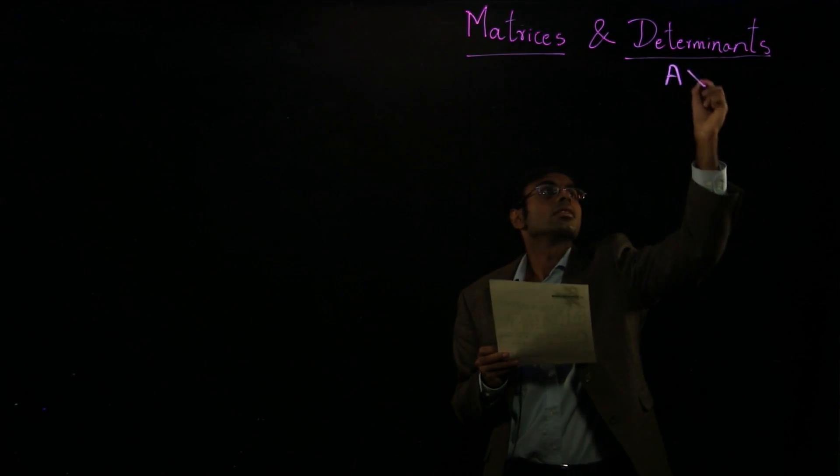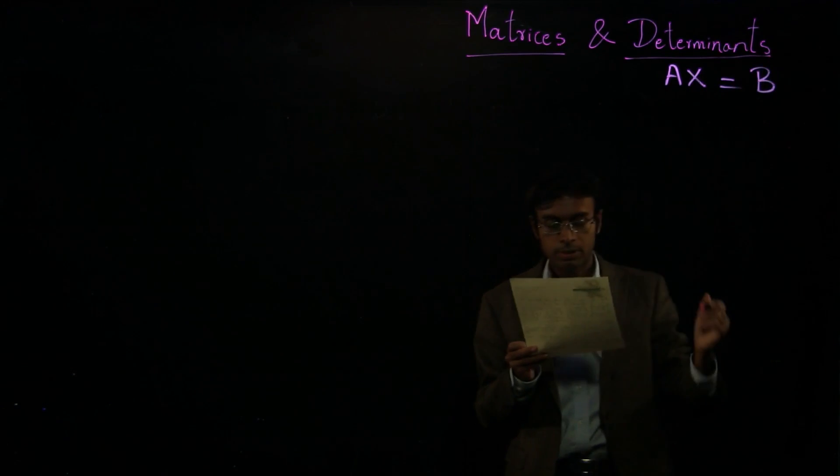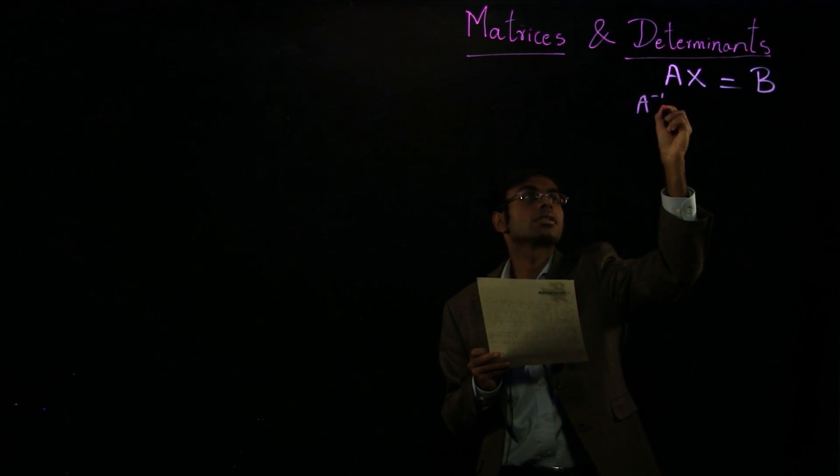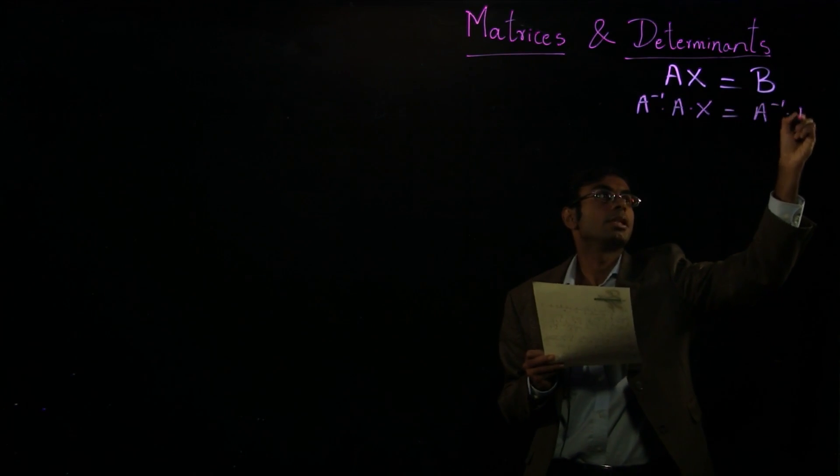The general matrix representation is Ax equals b. So pre-multiply it by A inverse. So A inverse times A times x equals A inverse times b.